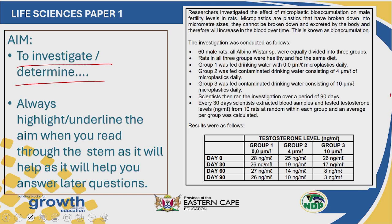If we take a look at the investigation on your screen — this comes from the trial paper for the Eastern Cape in Paper 1 — it's very important to underline the aim straight away as you are reading. Here it says: 'The researchers investigated the effect of microplastic bioaccumulation on the male fertility levels in rats.' We recognize this as the aim because of the word 'investigated.' The aim is a very important part of your scientific investigation because it's going to help you answer other questions in this section. My suggestion is always to highlight or underline that aim in your paper as you are reading.